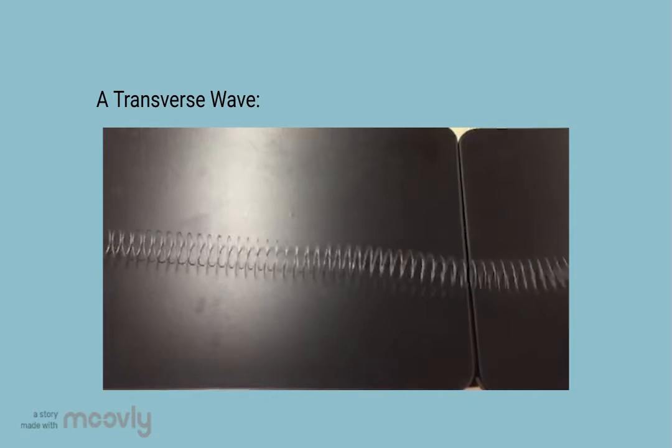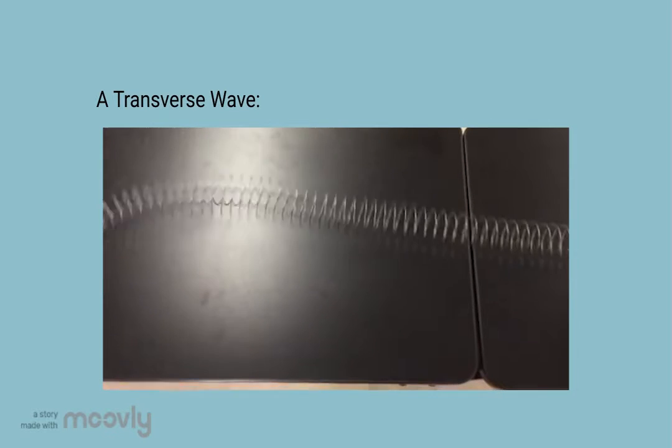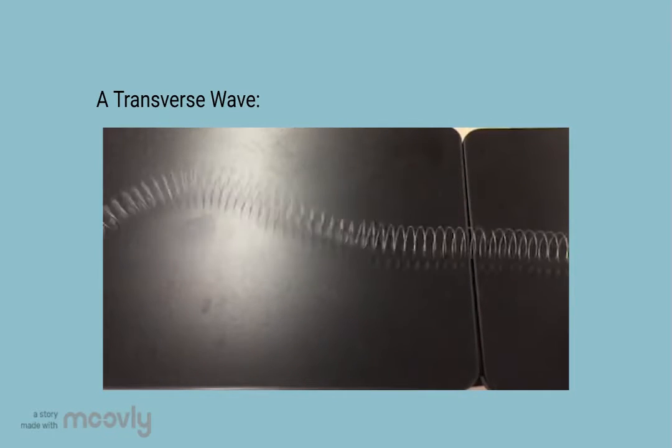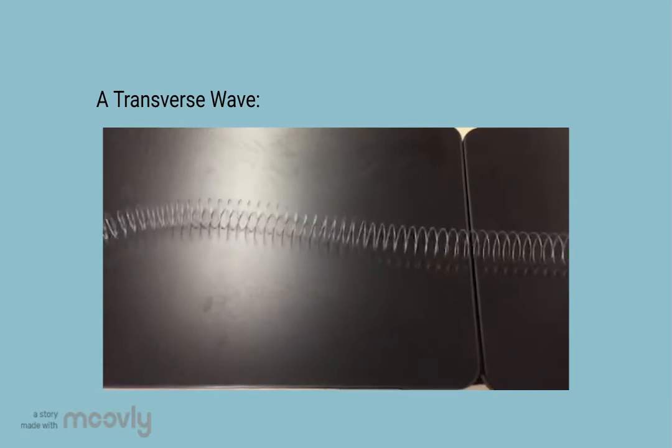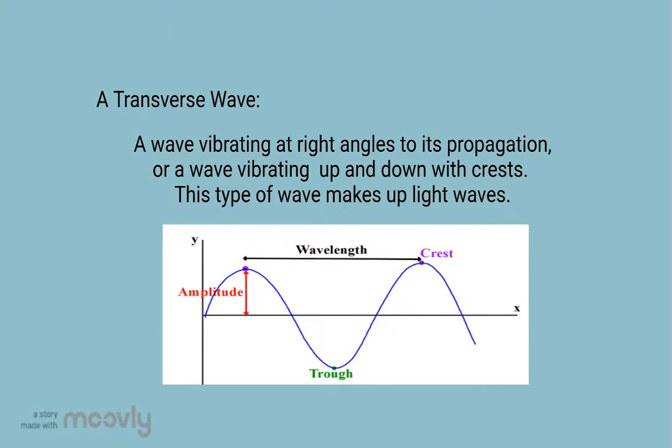Now, transverse waves. As you can see, it gets to the end of the slinky and it reflects back. When a wave hits something more dense than it, it reflects. A wave vibrating at right angles to its propagation, or a wave vibrating up and down with crests, this type of wave makes up light waves.